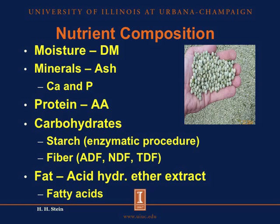The last thing we analyze for is fat. We prefer to use a procedure called acid hydrolyzed ether extract, which means that we acid hydrolyze our ingredients prior to extracting the fat with ether. This procedure will tell us the total concentration of fat in the ingredients. Sometimes we may also want to know the composition of that fat, and if so, we need to analyze for individual fatty acids. This is important if we have vegetable feed ingredients with a relatively high concentration of fat, because some of these fatty acids may have negative impacts on product quality in pigs and can result in soft bellies and soft back fat.